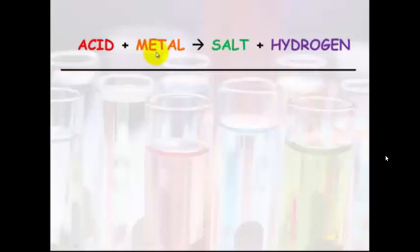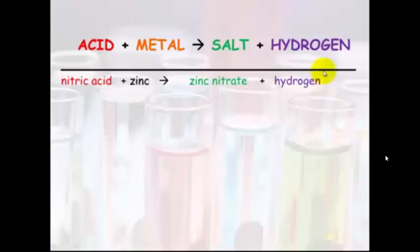An acid plus a metal, when combined, will always make a salt and hydrogen gas. An example of that: nitric acid plus zinc will make hydrogen gas, and what's left? Zinc nitrate.